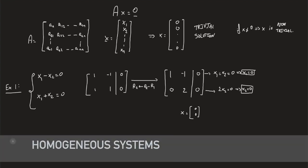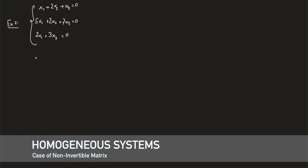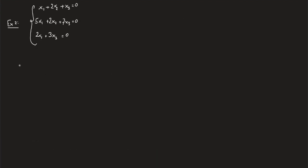Let me give you another example where things are a bit different. Consider the following 3 by 3 homogeneous system. Let's start by forming the augmented matrix as usual, which is this guy over here. Next, we try to null this guy out by replacing r2 with r2 minus 5r1.